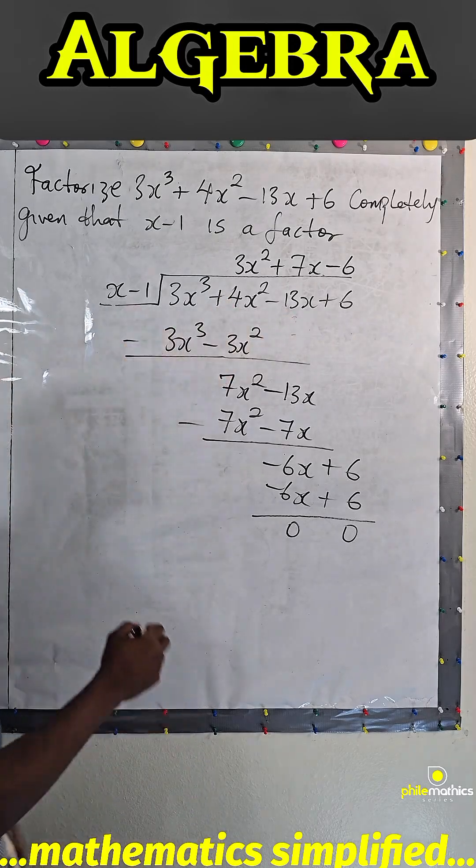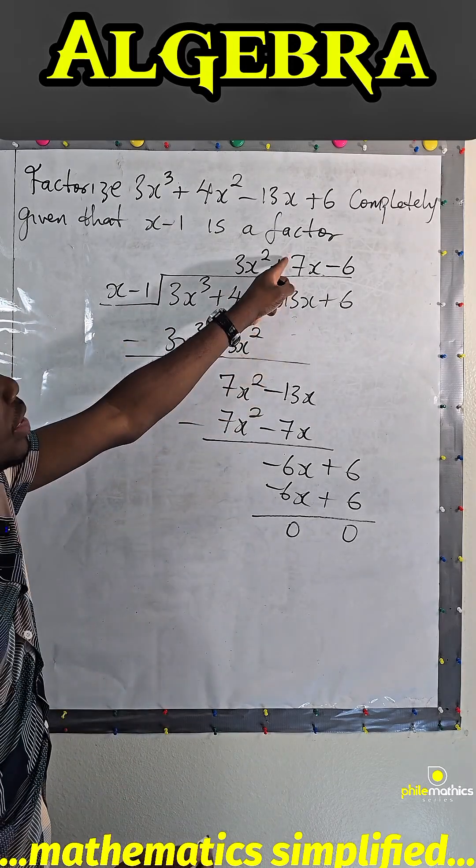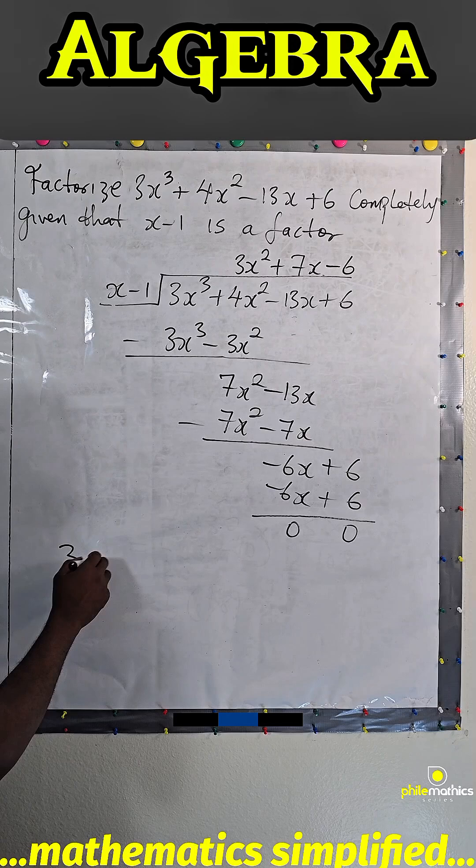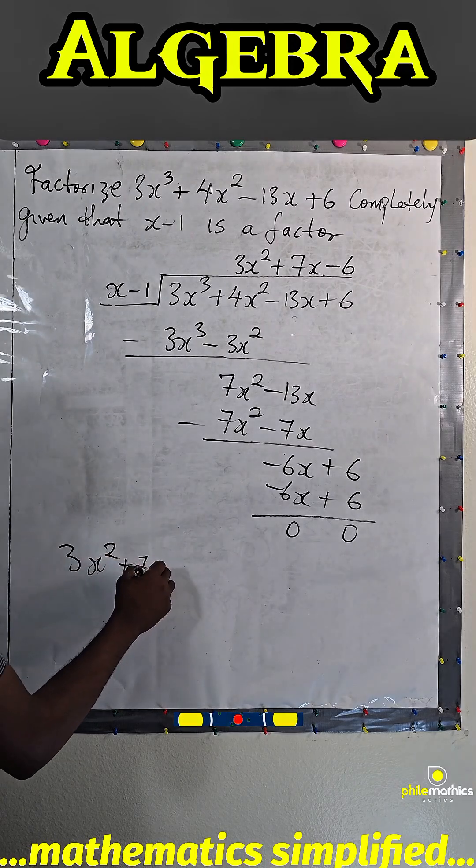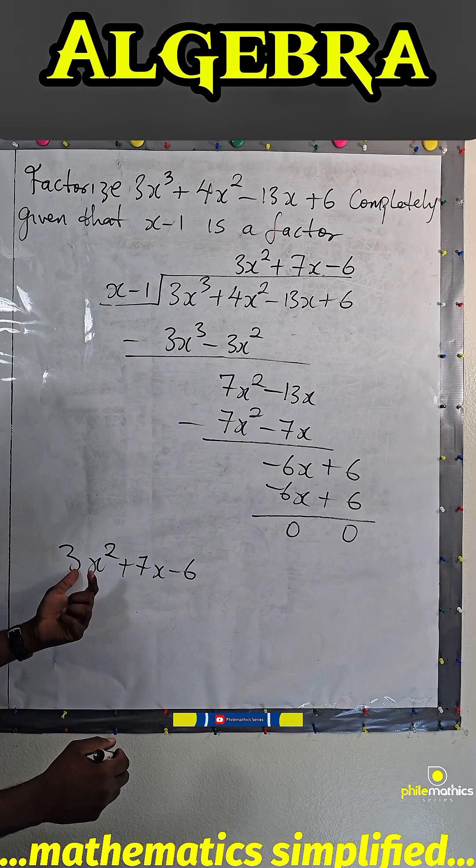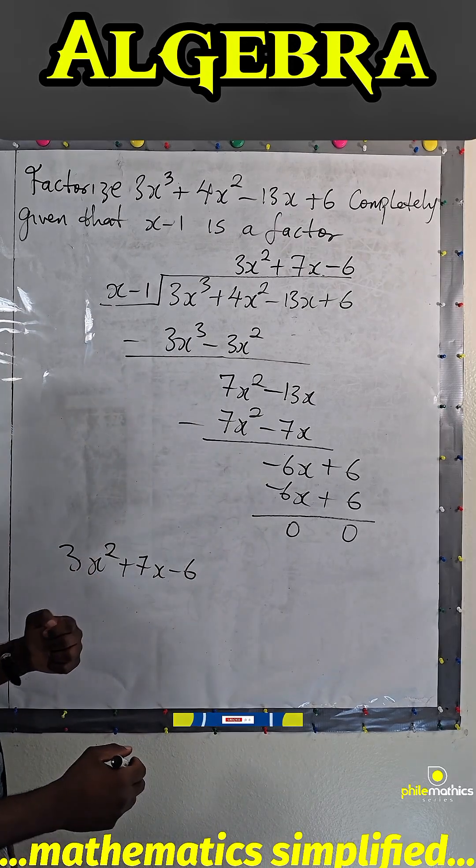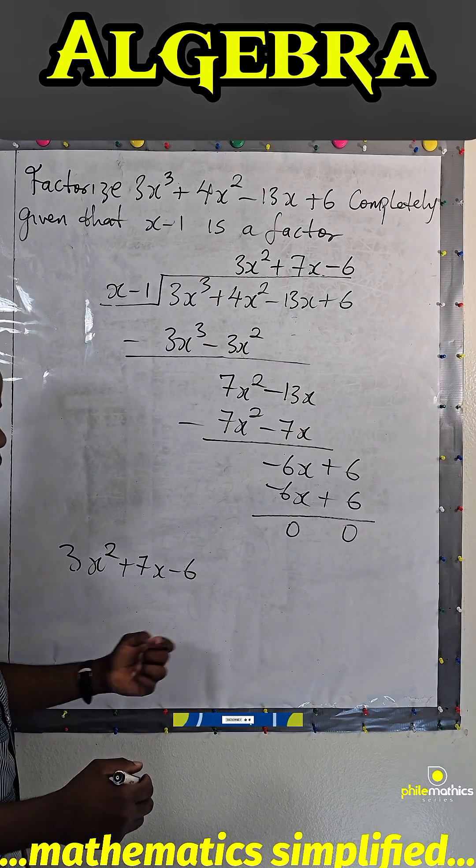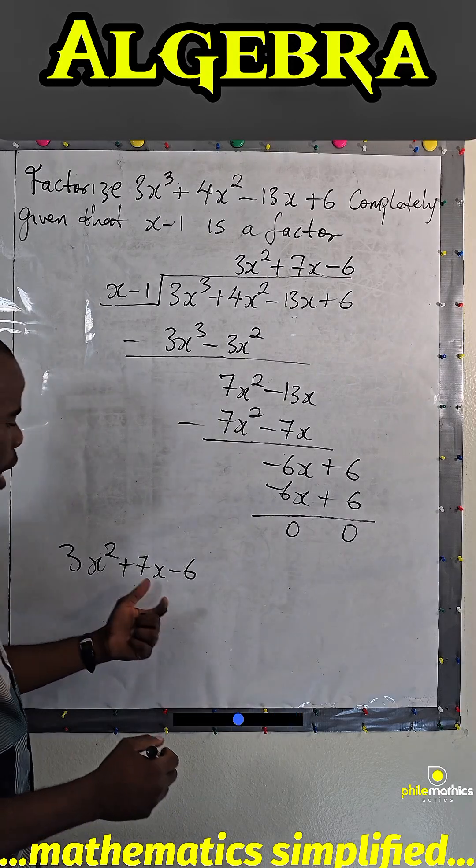So what we want to do now is to factorize this 3x² + 7x - 6. We factorize it. 3 times 6 is 18. Two numbers that when we multiply we get minus 18 and when we add we get 7 will be 9 and minus 2.